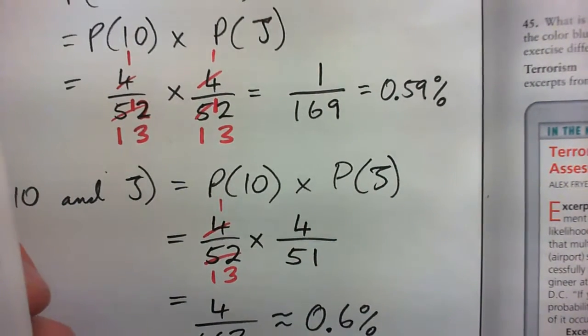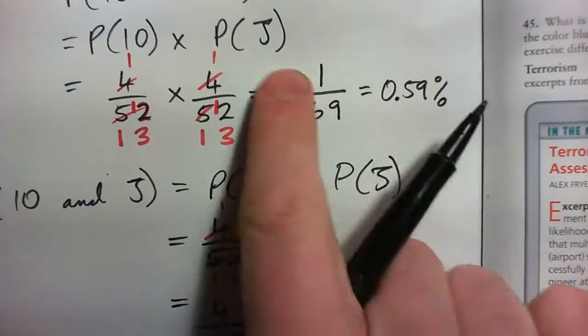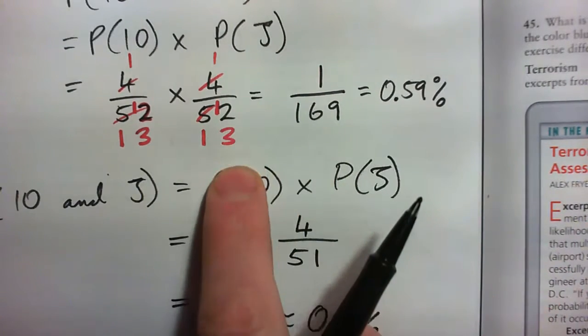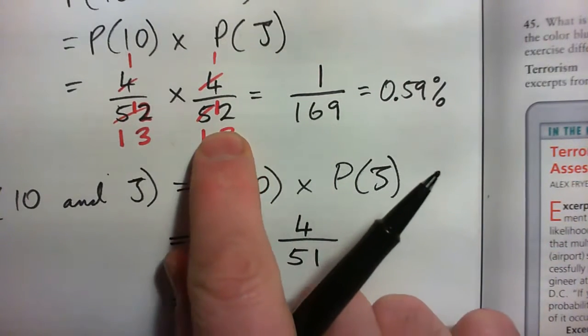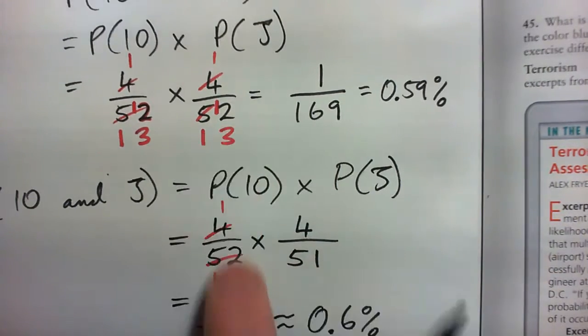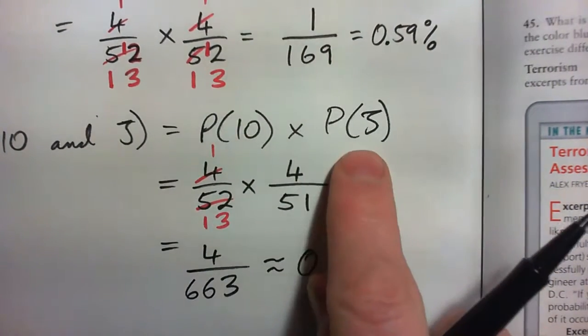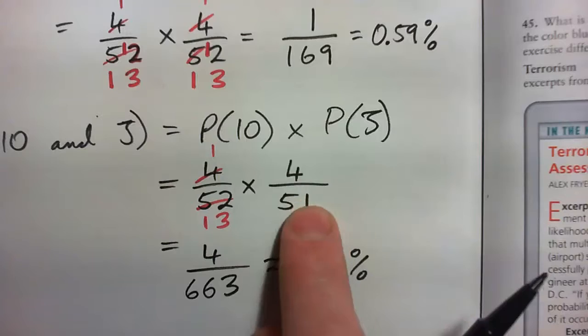When you put the card back, there was less chance of getting a jack because the next time you're choosing out of 52.